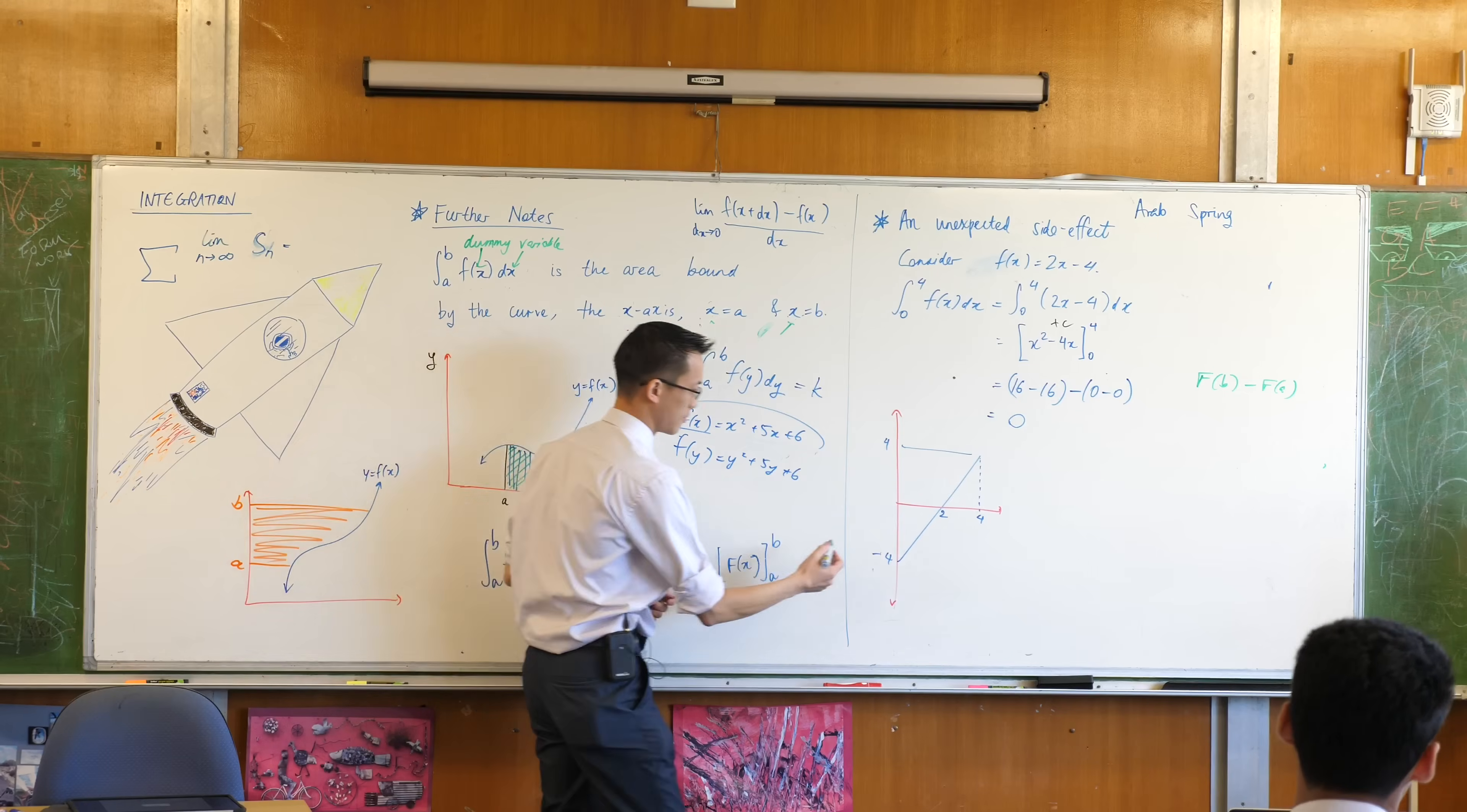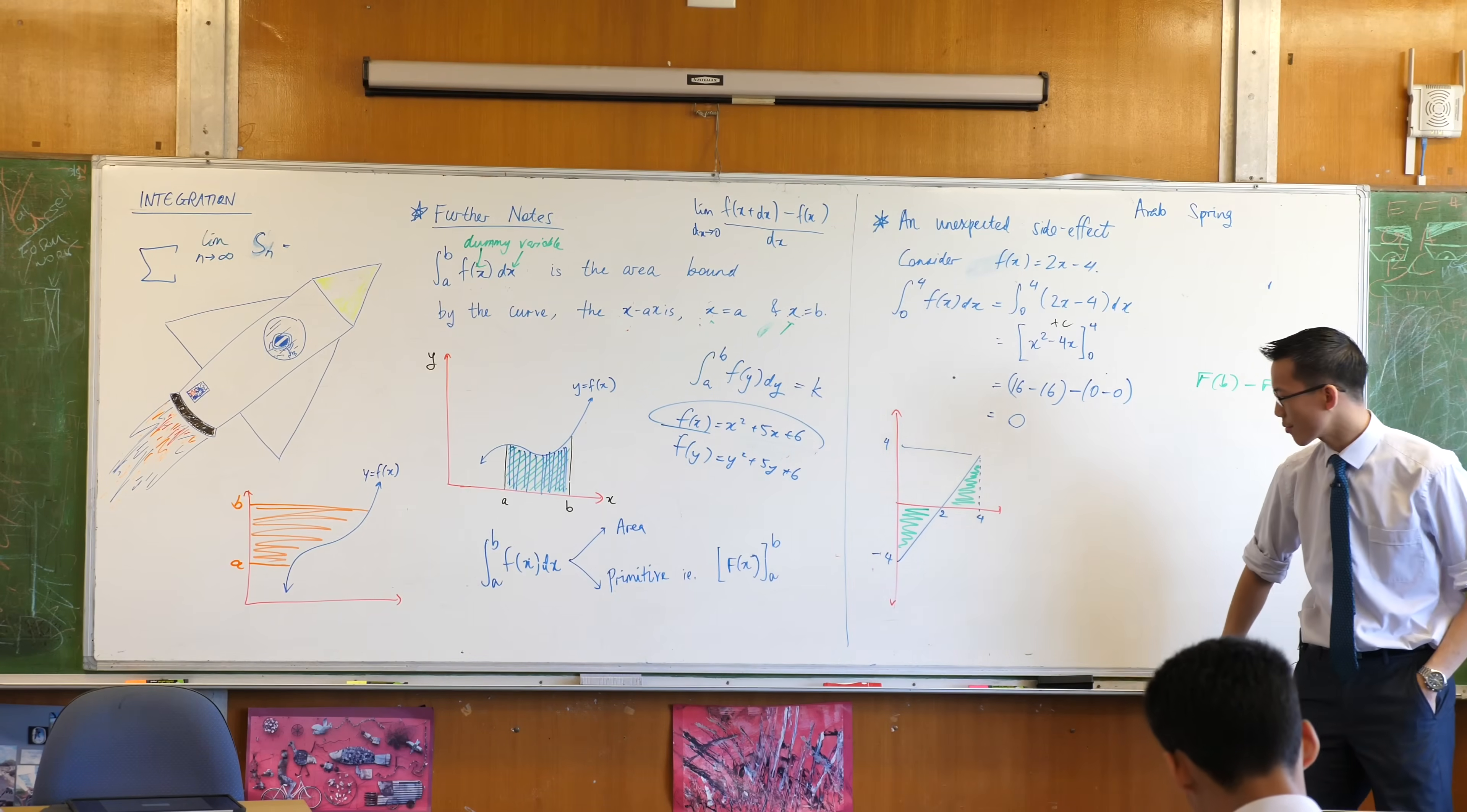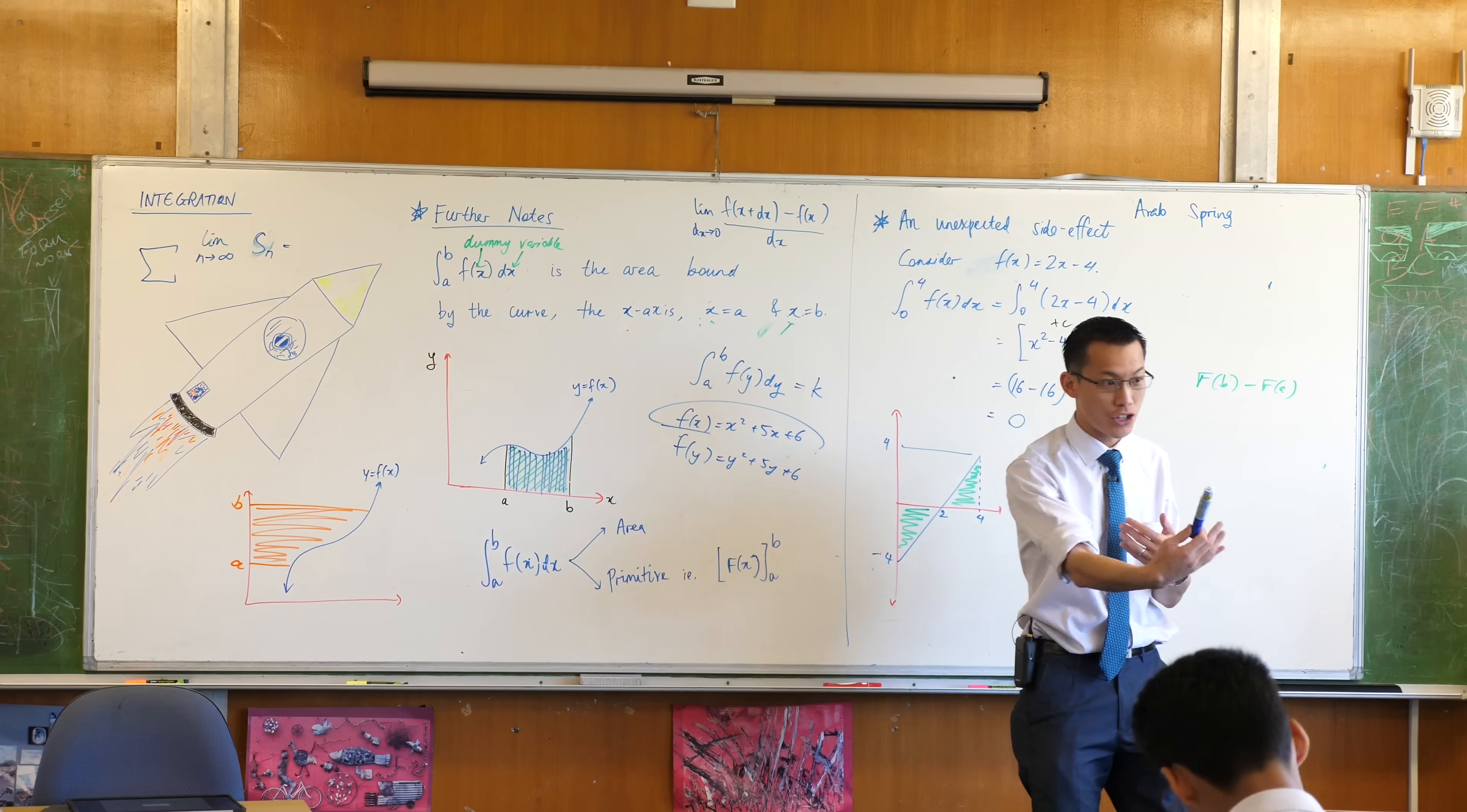Okay. Now, if I go back to my definition that I've helpfully written here, I'll change them all back to x's because I'm thinking about x's right now. The integral from a to b of f of x dx is supposed to be the area bounded by the curve, the x-axis. Look at where the x-axis is. x equals a, which in this case is x equals 0, this guy here. And x equals 4, which is this dotted line just on the edge.